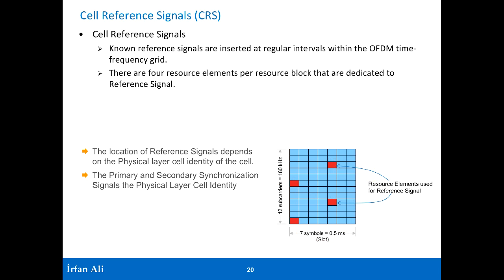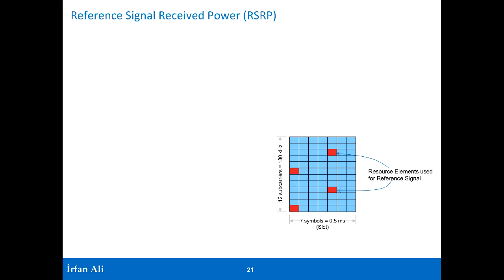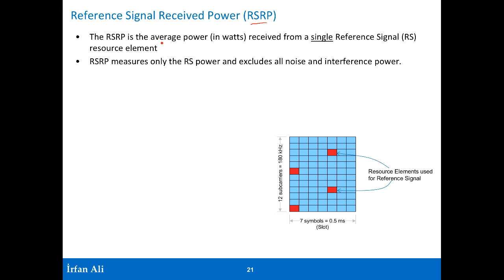What the mobile actually measures is called the Reference Signal Received Power, or RSRP. RSRP is the average power in watts received from a single reference signal. It is the power contained in a single reference signal, including only that reference signal's power and excluding all noise and interference power. The mobile's radio is smart enough to find out what the power in this reference signal is.